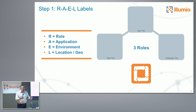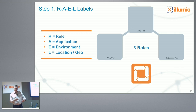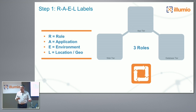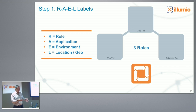Then you go and implement that policy model, and functionally it all works and addresses those customer things. And then you get to the point where you say: make that scale. Make that scale to hundreds of thousands of workloads, large enterprises. And then you realize you just created an N-squared algorithm in terms of policy computation, and the thing cannot scale.